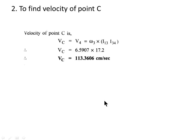Next, find the velocity of point C. Since C is on link 3 as well as link 4, we can consider C as on link 3. Then velocity of C = omega3 × distance from I13 to I34. Measure the distance from I13 to I34, multiply by omega 3, and that gives the velocity of point C. In this way, by locating the ICRs of the mechanism, you can find the linear velocity of any point and the angular velocity of any link.